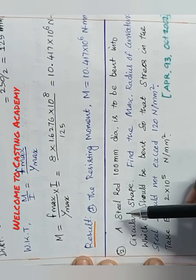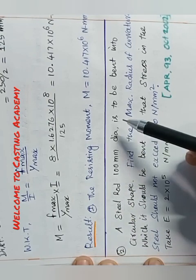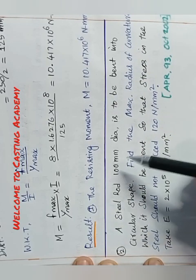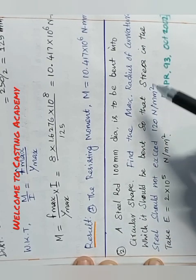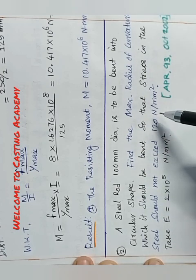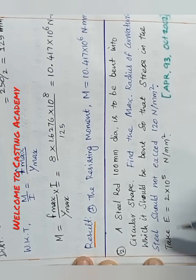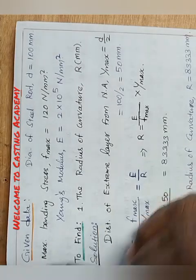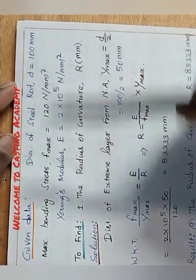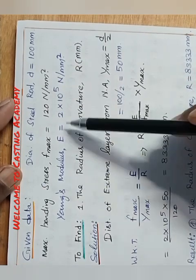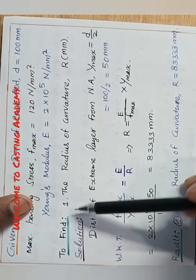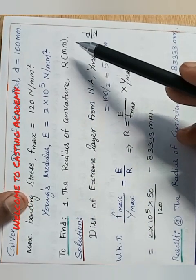Next problem: a steel rod 100 mm diameter is to be bent into a circular shape. Find the maximum radius of curvature to which it should be bent so that the stress in the steel does not exceed 120 Newton per mm square. Take Young's modulus E equal to 2 × 10⁵ Newton per mm square. Given data: diameter D equals 100 mm, Fmax equals 120 N/mm², E equals 2 × 10⁵ N/mm². Find the radius of curvature R in mm.